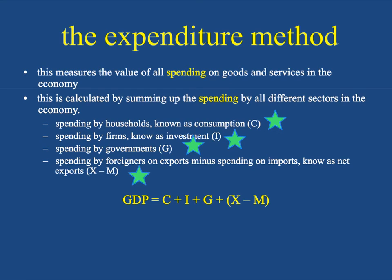The last component is spending by foreigners on exports minus spending on imports — that's called net exports. If I live in Chile and buy a guitar made in the United States, my money earned in Chile leaves Chile and goes to the U.S. — that's an import, with money leaving. The opposite is if someone in the United States buys a backpack made by Doite, a reputable Chilean brand of outdoor gear, and sends their dollars into Chile — because Chile exported something and money is coming in. You take the money spent by foreigners buying Chilean goods and subtract the money I spent on the guitar from the U.S., and you end up with X minus M, the balance of exports and imports.